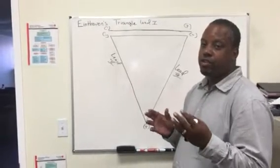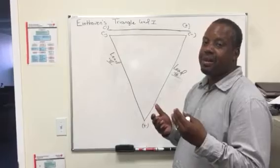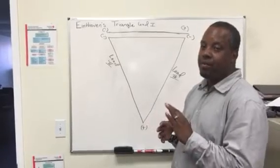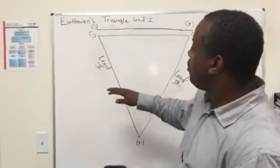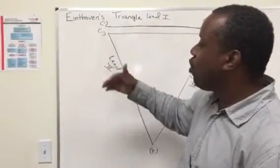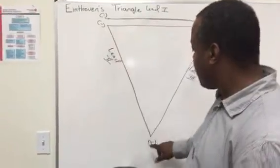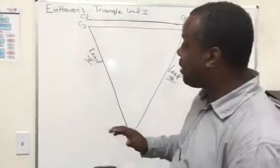Today we're going to do a brief tutorial on Einthoven's Triangle. And this basically tells us about how the conduction travels in each lead of an ECG. So as you see here, lead 2, the current always goes negative to positive. All current flows negative to positive.